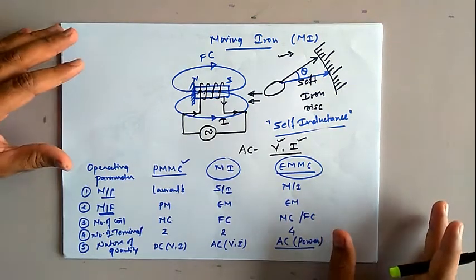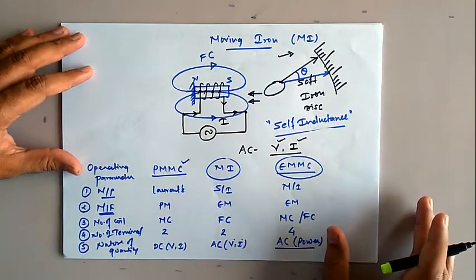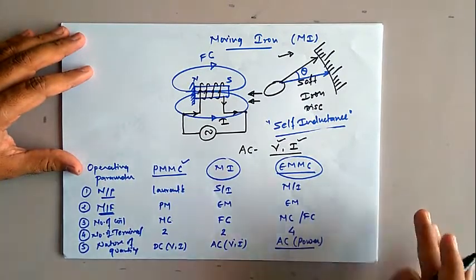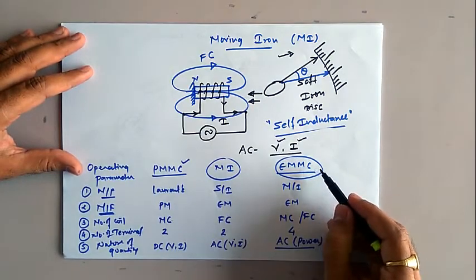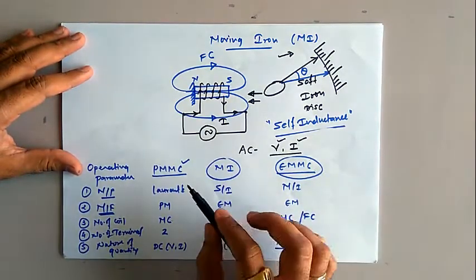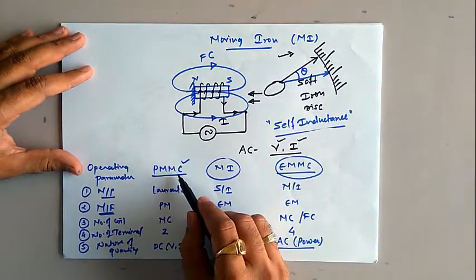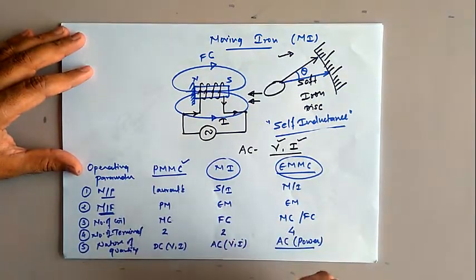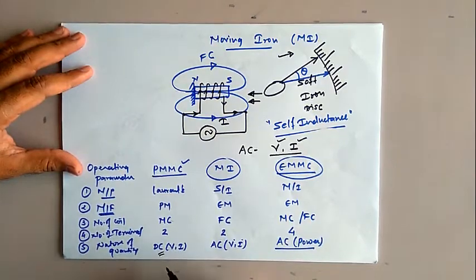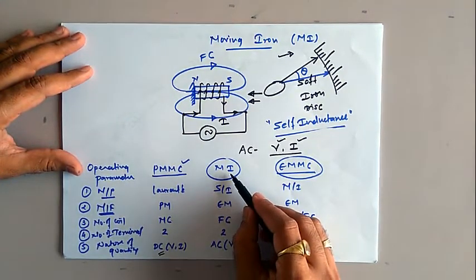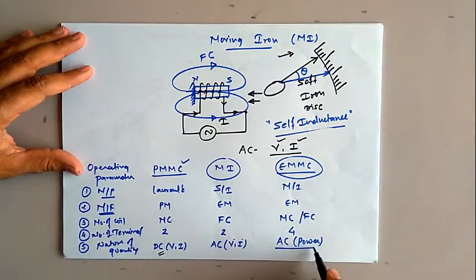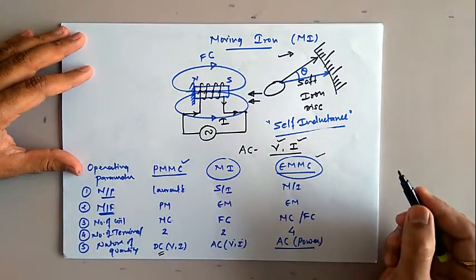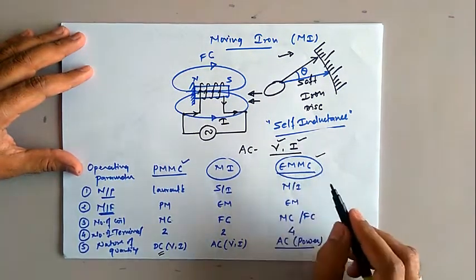Welcome back. In the last lecture we saw in detail about the concept of PMMC type instrument, MI type instrument, and EMMC type instrument. PMMC type instruments are used for measurement of DC voltage and current, MI type instruments are used for measurement of AC voltage and current, and to measure AC power we use EMMC, that is the electromagnetic moving coil type instrument.